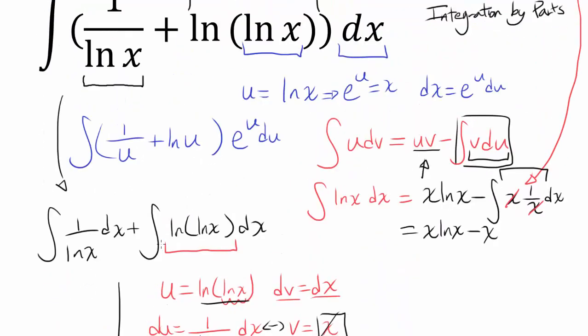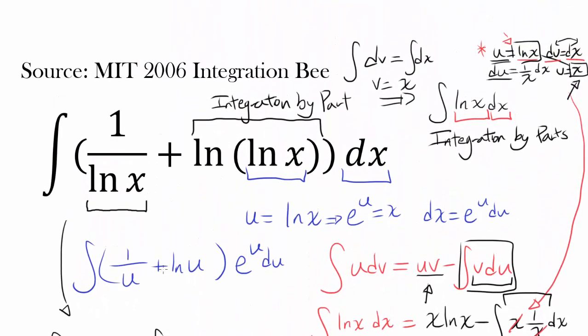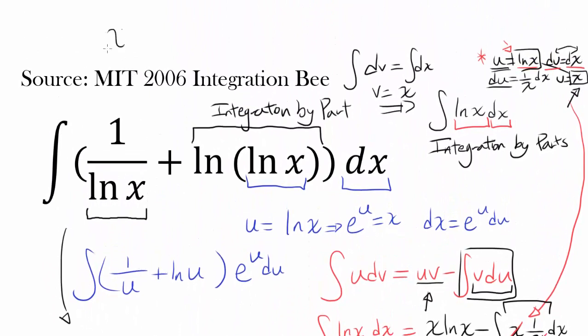So this crazy expression, when you integrate it, gives us x times natural log of natural log of x, plus C.